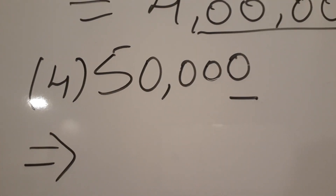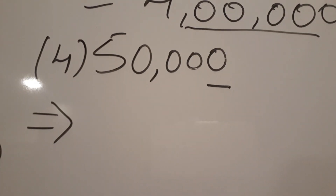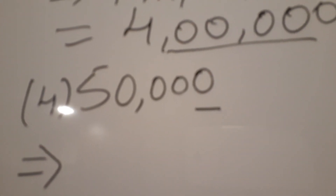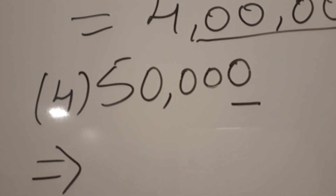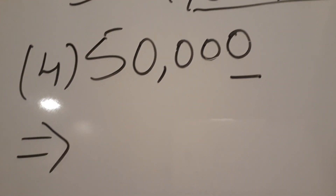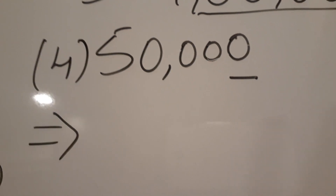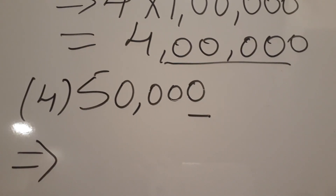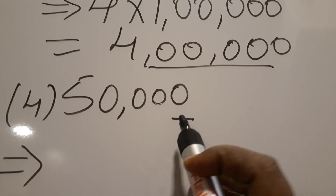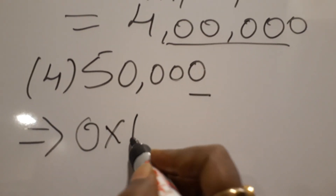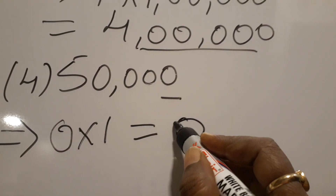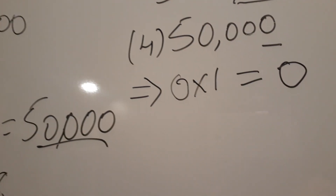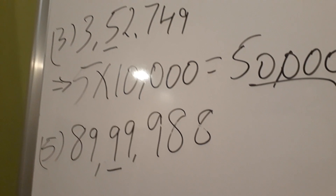Fourth one. Read the number — fifty thousand. This is a five digit number, which has four zeros. The digit zero is underlined and zero is in units place. Zero into one equals zero. Anything multiplied by zero is zero — always remember. Zero into thousand is zero, zero into crores is zero. Whatever number is multiplied with zero, the answer is zero.